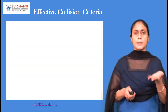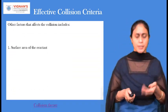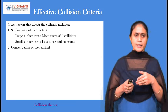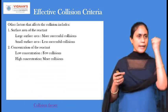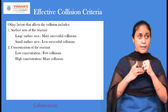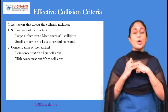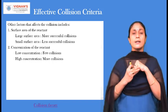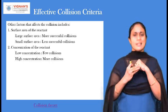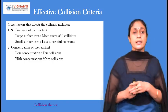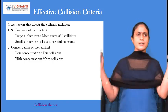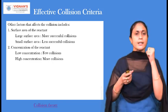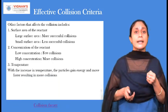Another important criterion is the surface area of the reactants. If you consider a reactant molecule with a large surface area, then the probability of collisions is more. If you consider reactants with smaller surface area, there is less probability of successful collisions. Another factor is the concentration of reactants — high concentration means more probability of collisions, while low concentration means less probability of collision.